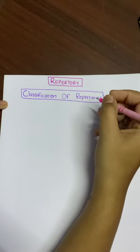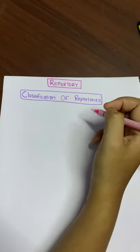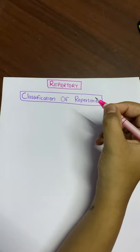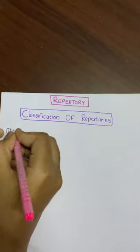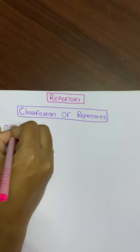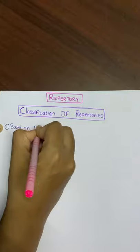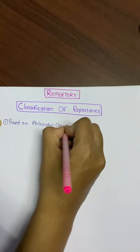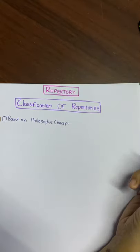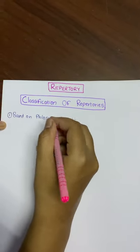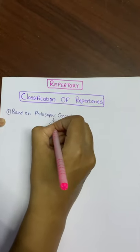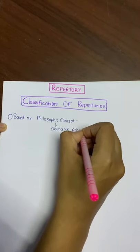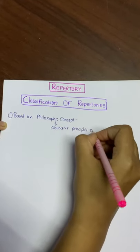Repertories have been classified into various groups by different authors, but there is no standard classification that prevails. The most comprehensible classification would be: the first is based on philosophic concept. These are the repertories having some distinctive principles of their own.